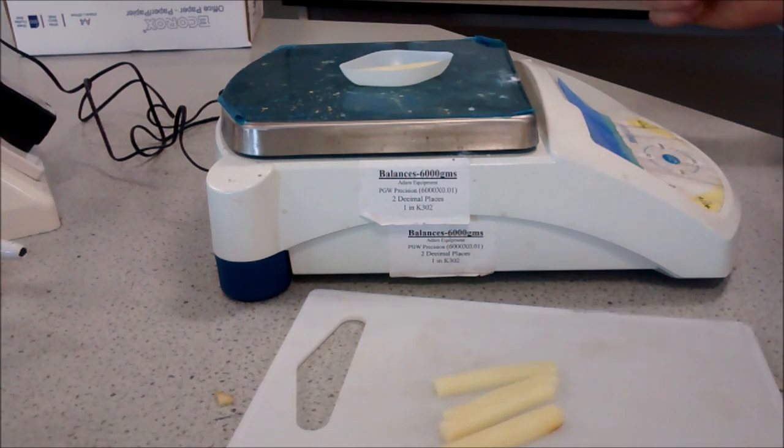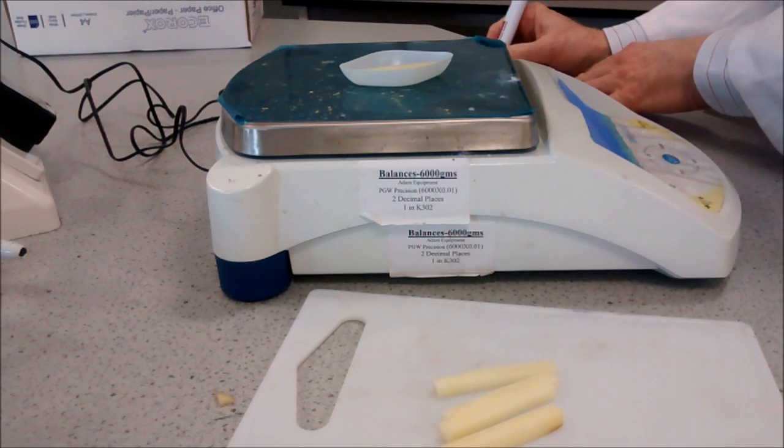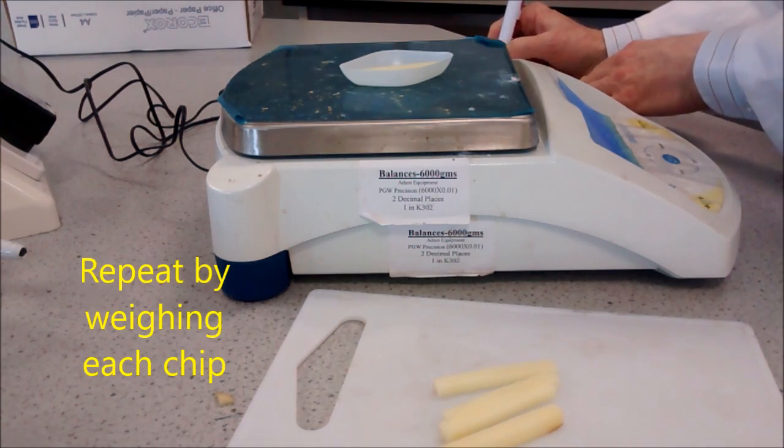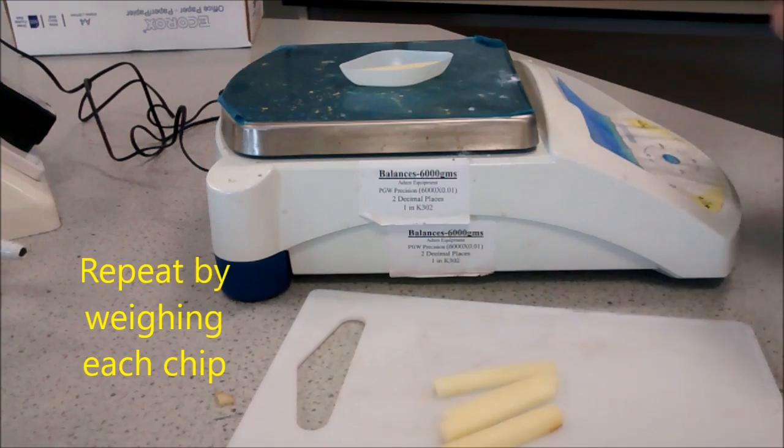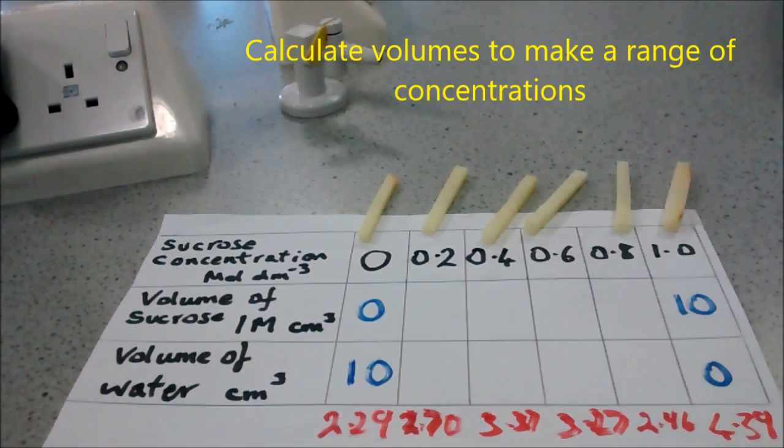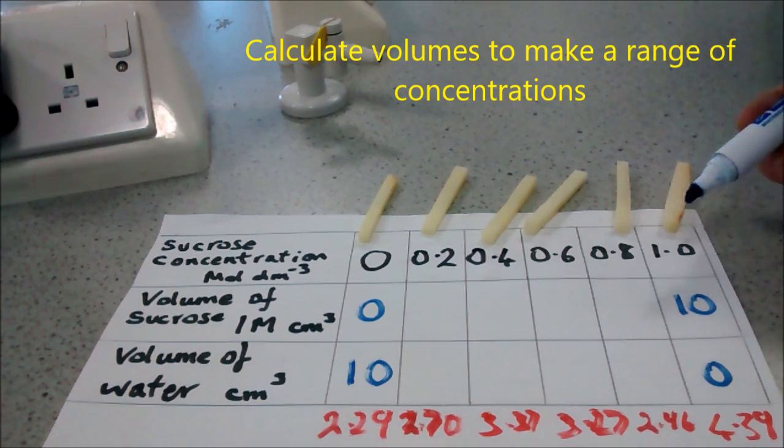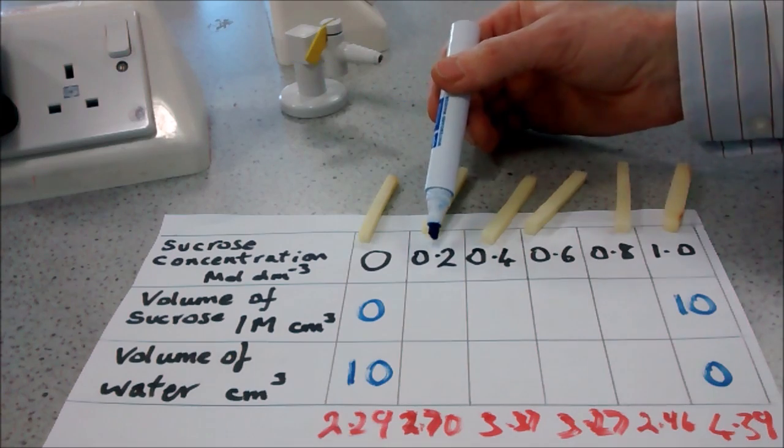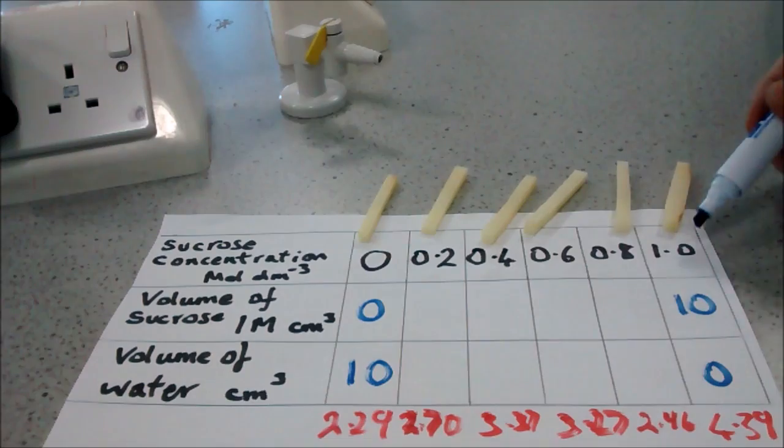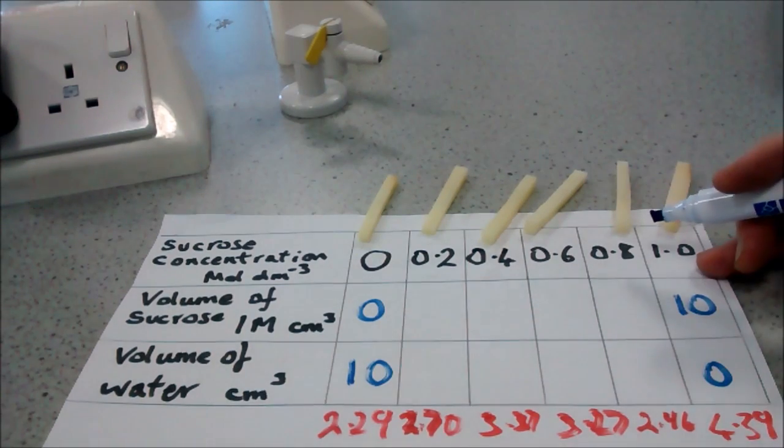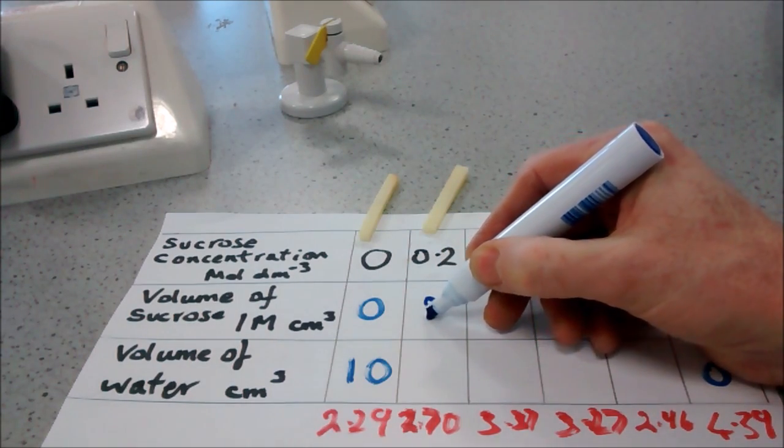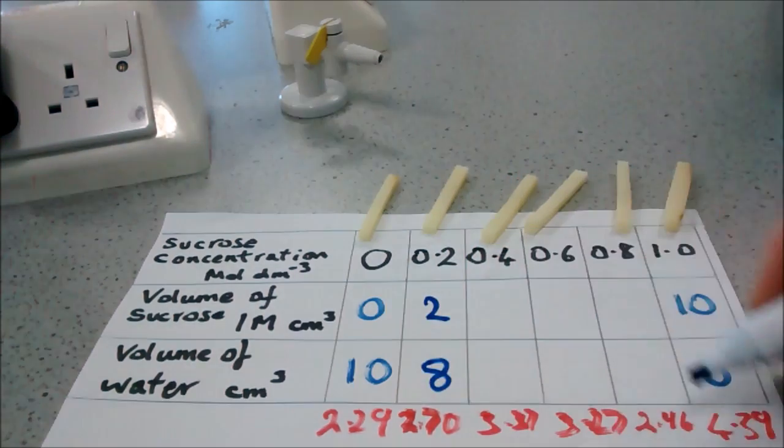2.7 grams. Okay, so we need to make sure we've got a range of concentrations. We need concentrations from 0.2 up to one molar. We've got a solution of one molar sucrose. To make 0.2 molar, we need two milliliters of the sucrose with eight milliliters of distilled water.